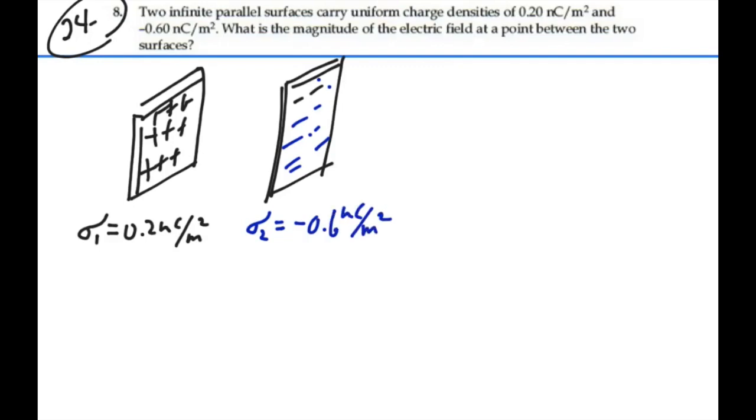Now, if we have an infinite sheet of charge, the E-field's going to be constant anywhere on either side of the sheet of charge. In the case of the first sheet, it's going to be an E-field that's emanating away from this positive sheet of charge. So we'll have some kind of E-field, let's call it E1, that is emanating away from this sheet of charge.